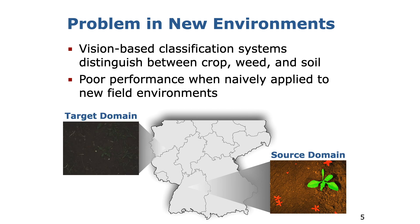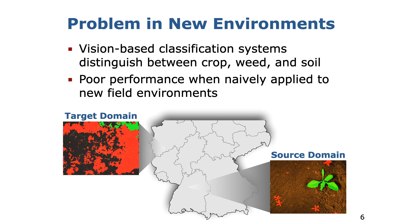However, the performance of a classifier which has been trained in the source domain suffers substantially when being deployed in new field conditions. We call those new environments the target domain. The domain shift is affected by a different visual appearance, induced by different weed types, growth stages of the plants, soil conditions and illuminations.